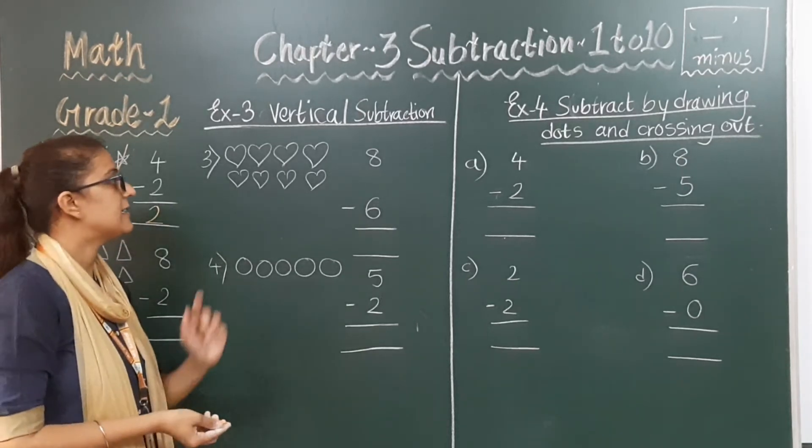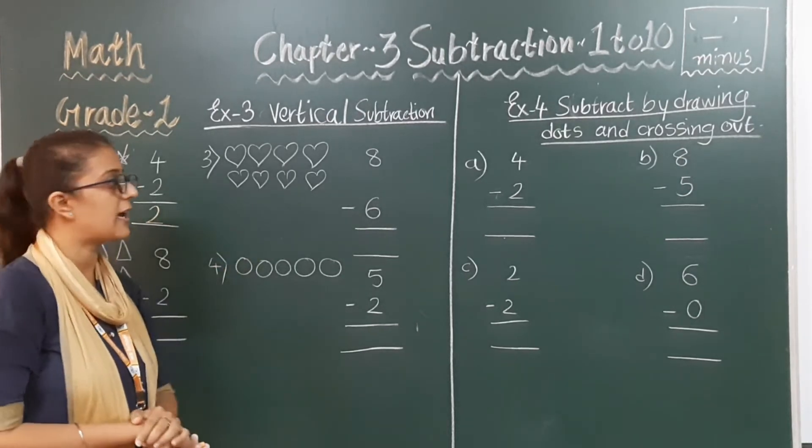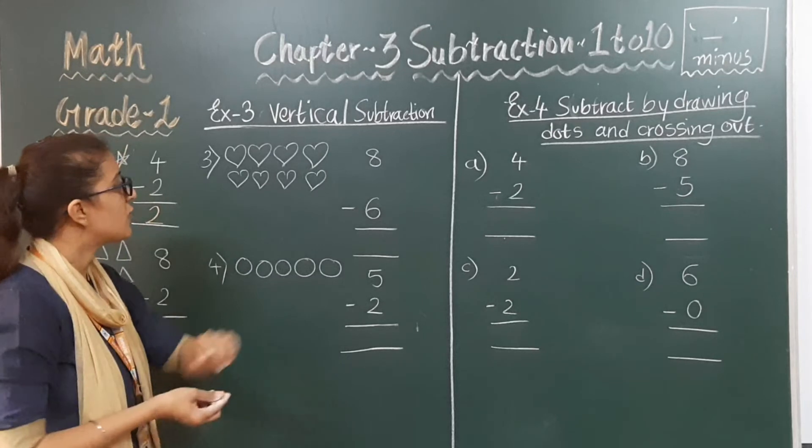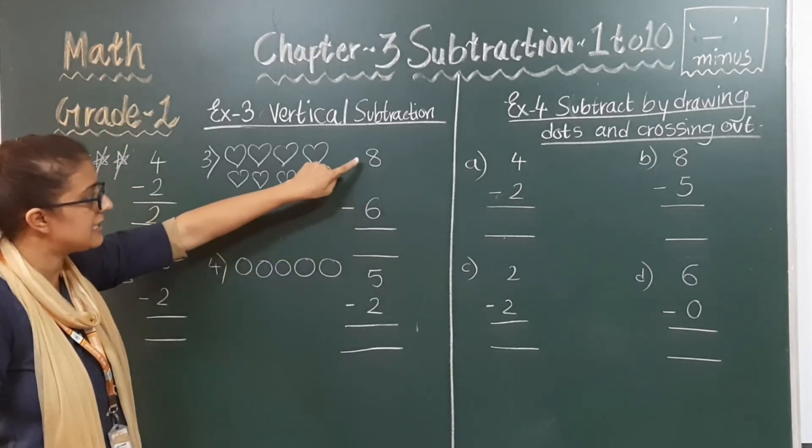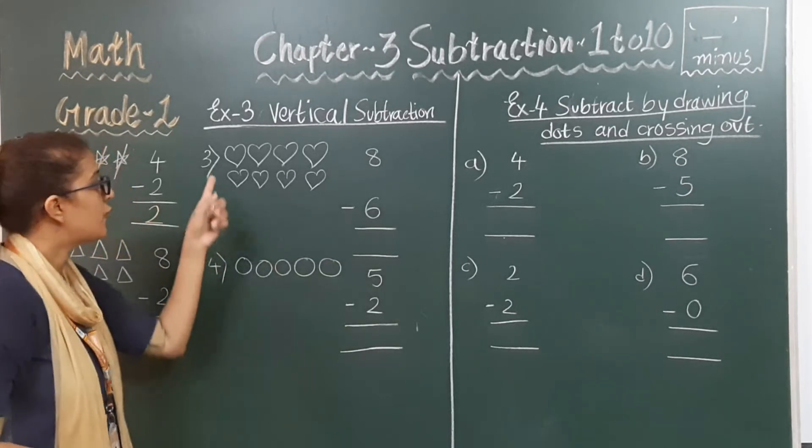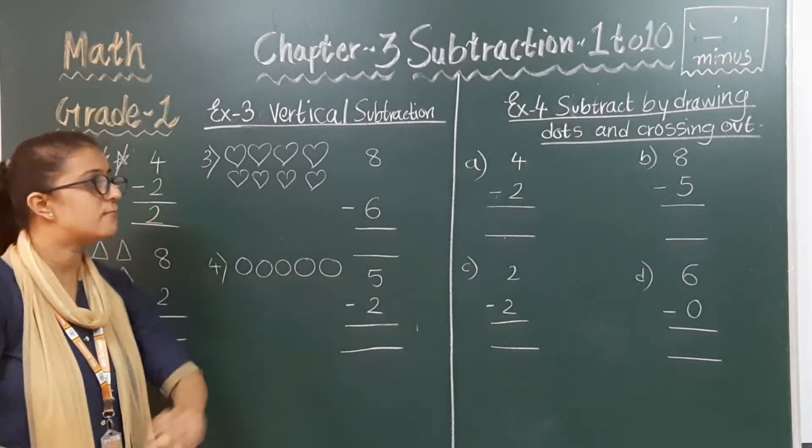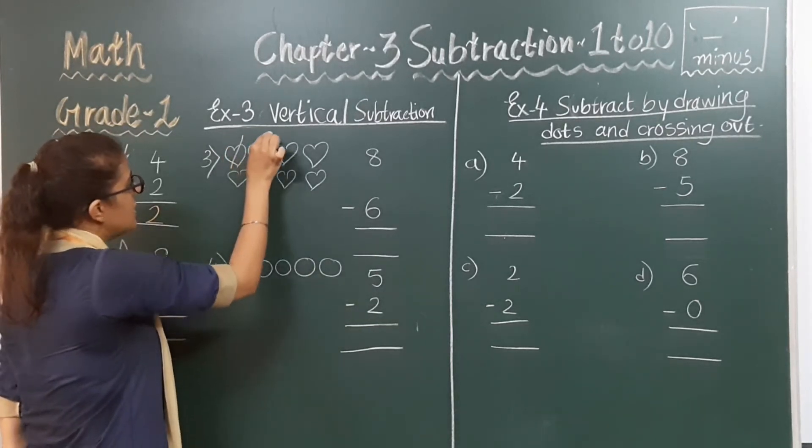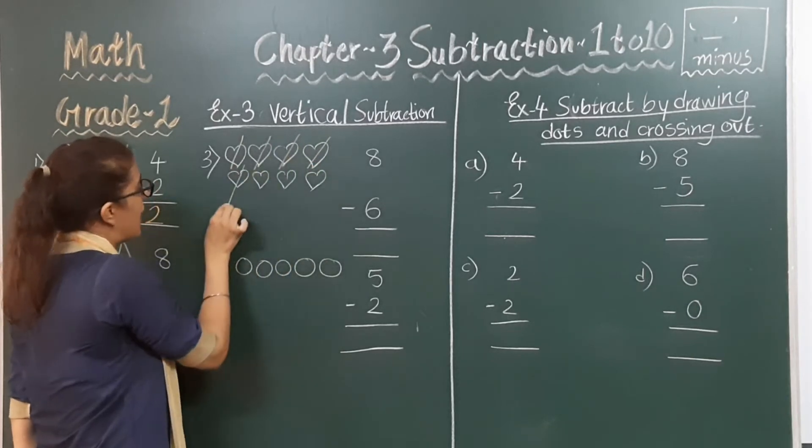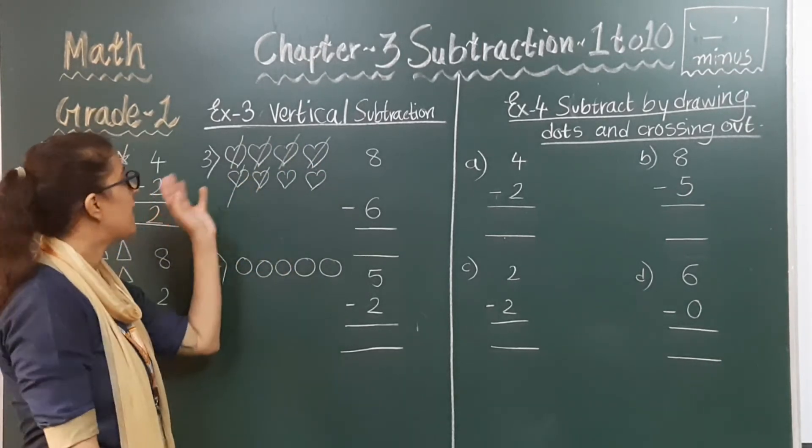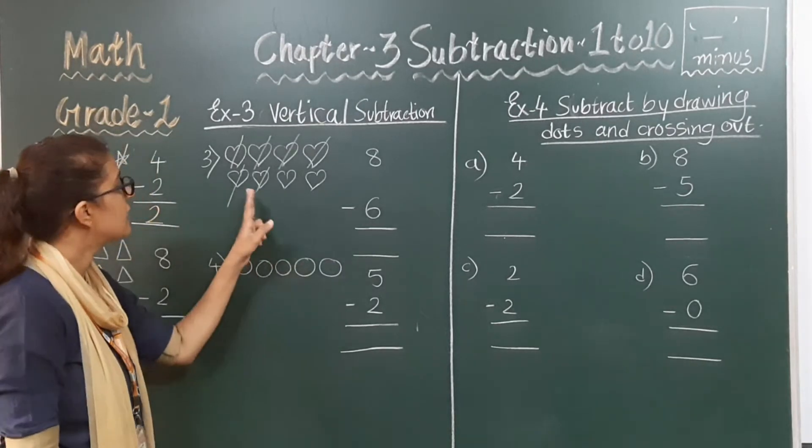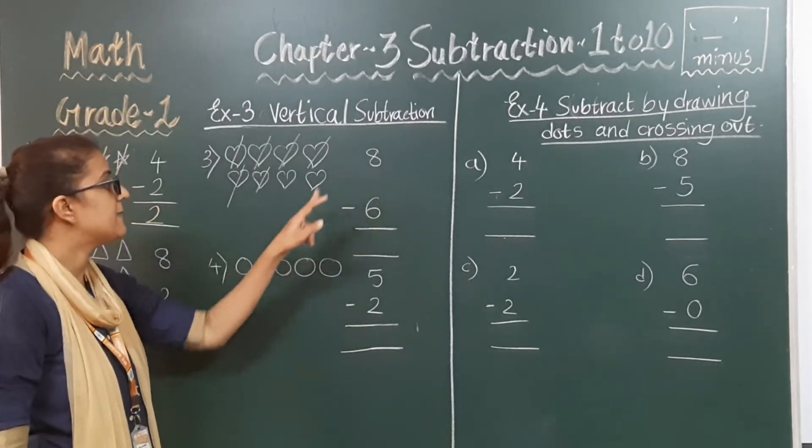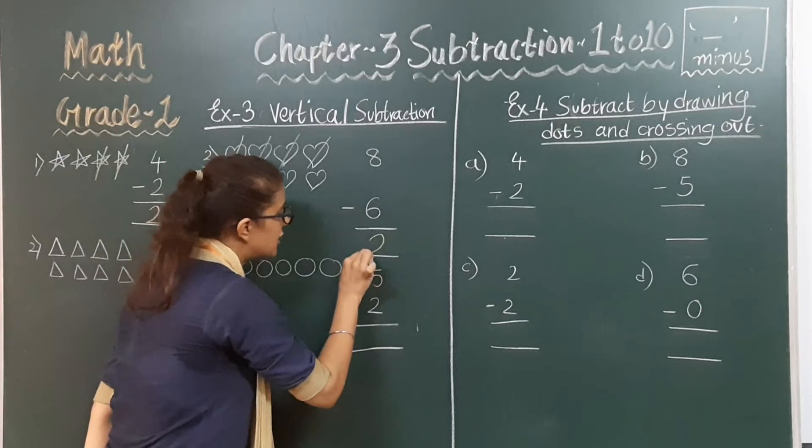Next, there are some hearts given to you. One, two, three, four, five, six, seven and eight. Total 8 hearts are there and the digit 8 minus 6. So from this 8 hearts we have to minus 6 hearts. Let's do that. One, two, three, four, five, six. So we have cancelled 6 hearts. So now how much left? One and two. So 8 minus 6 is two. Yes, 8 minus 6 is equals to 2.